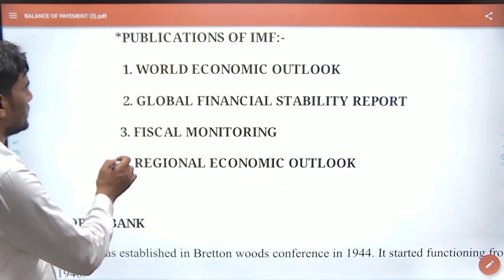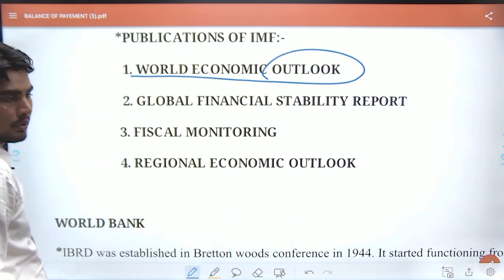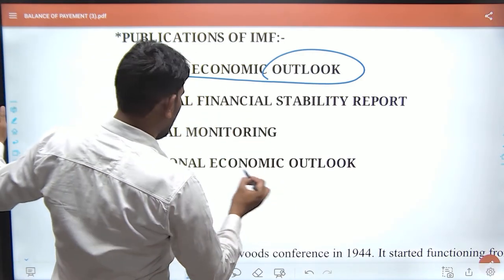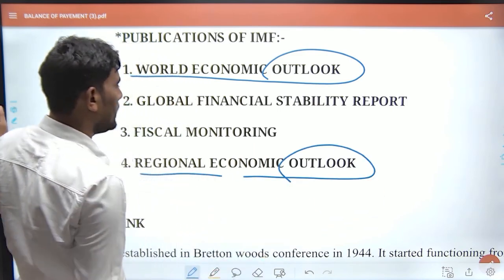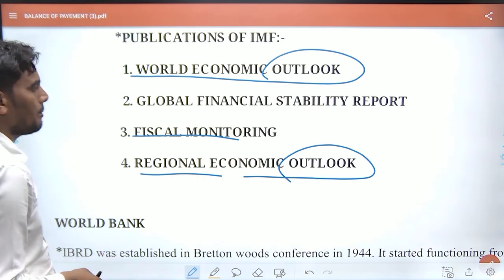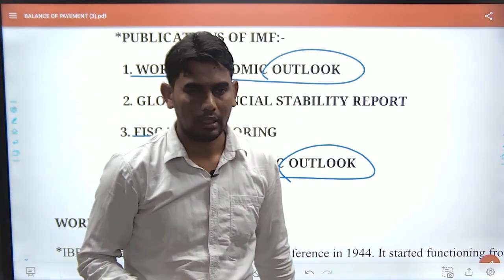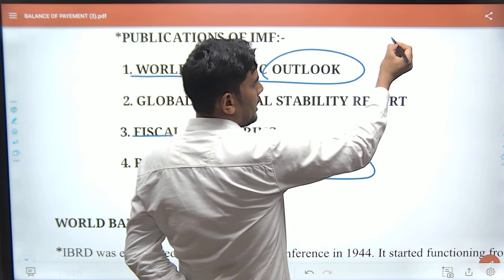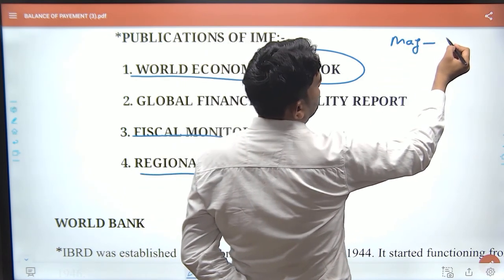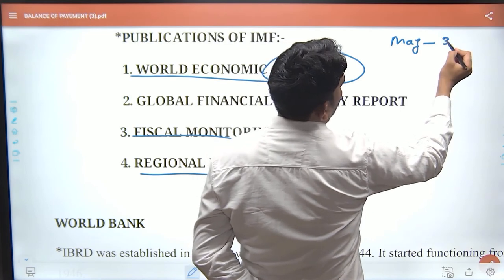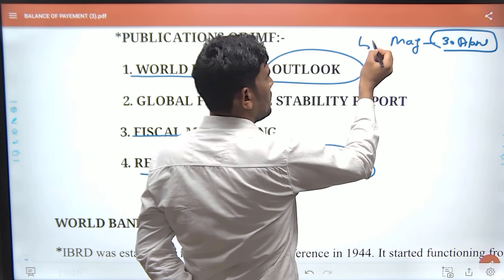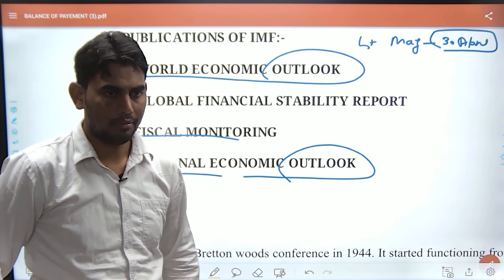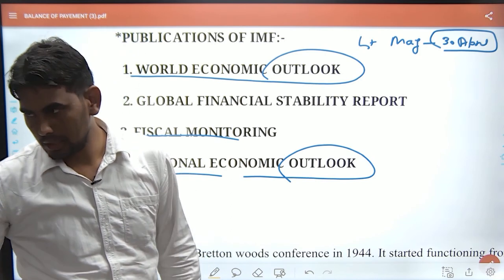The basic vote is 250, with an additional vote per SDR held. Key IMF publications include: World Economic Outlook, Regional Economic Outlook, Fiscal Monitoring, and Global Financial Stability Report. The World Bank publishes the World Development Report. The IMF's financial year runs from May 1st to April 30th.